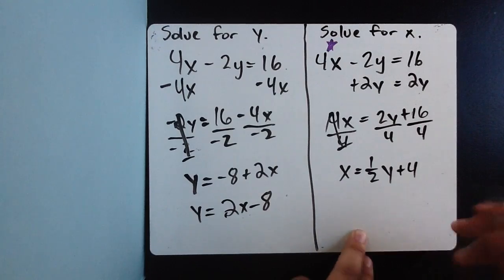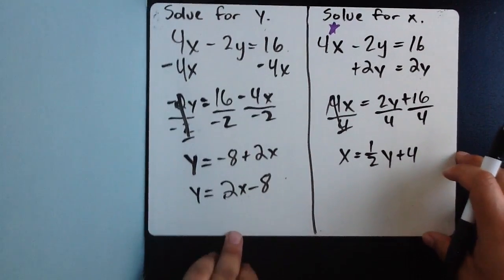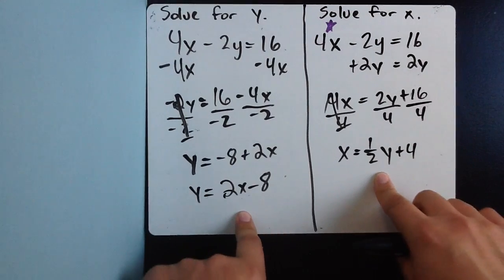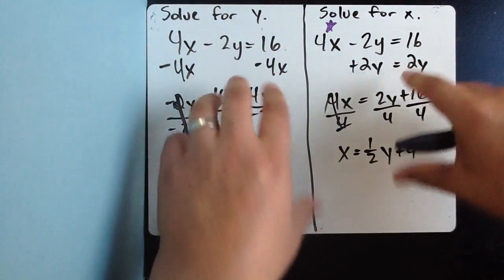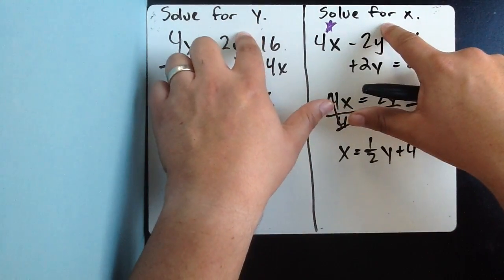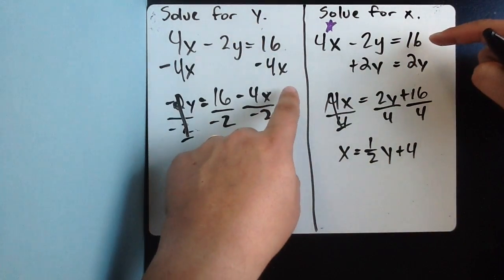And so, now, my answer is x equals 1 half times y plus 4. Now, if you look at these, they look completely different, and that's okay because the clue to this game is identify what you need to solve for using the algebraic method.